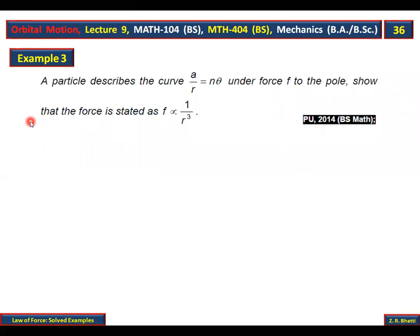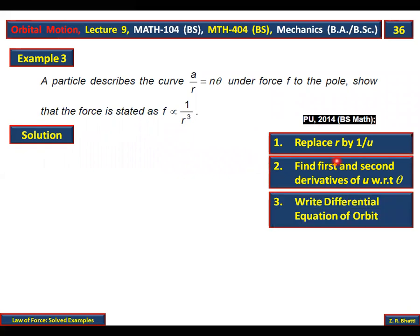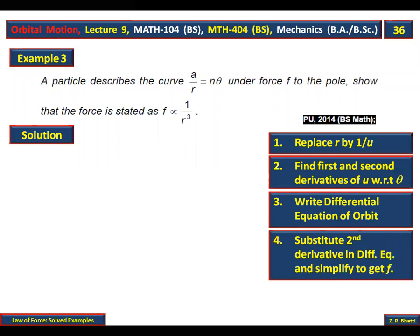Now, for solving the previous lecture number 8 method, which is the first question, you can see the steps. Replace r by 1 over u. And after that, first derivative length with respect to theta. Differential equation. First and second derivative length. Differential equation of the orbit. And then substitute it and simplify it.